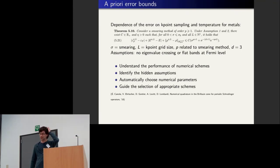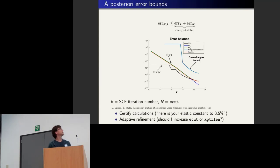So the point of this study is to understand the performance of the numerical scheme, derive explicit and rigorous bounds, and also identify the assumptions that are not always made explicit. So in this case, we have explicit assumptions, which are that you have nice structure around the Fermi level, basically.